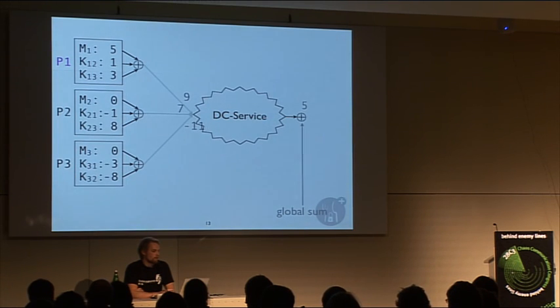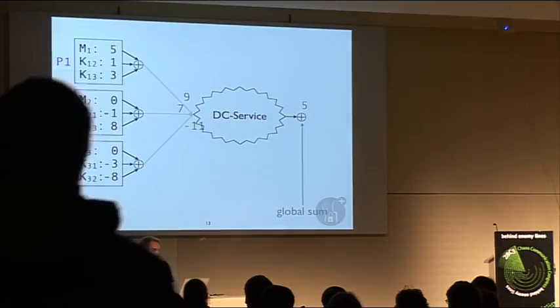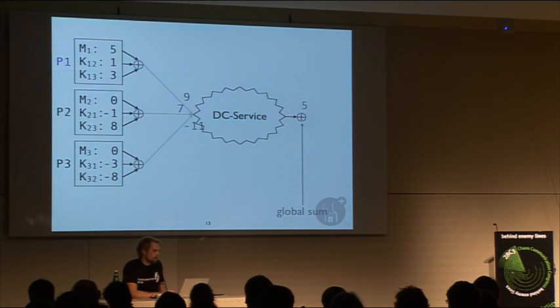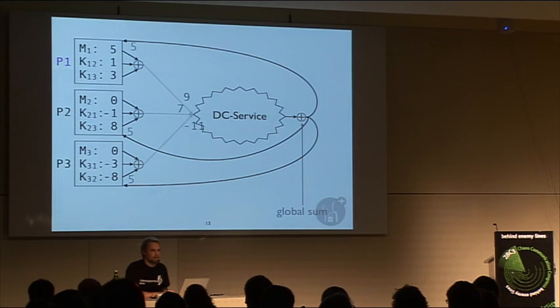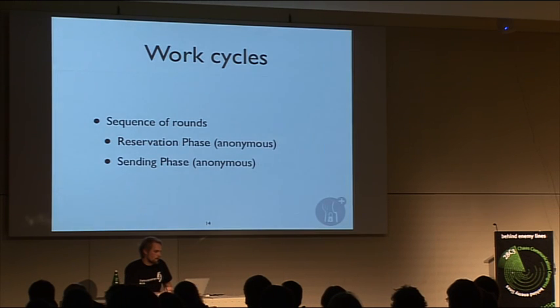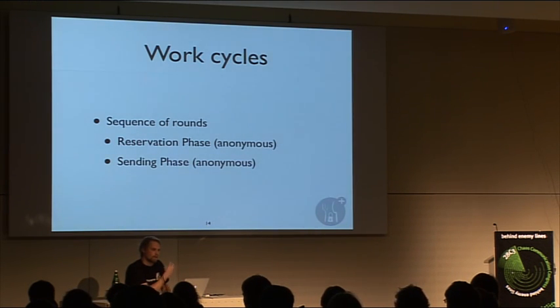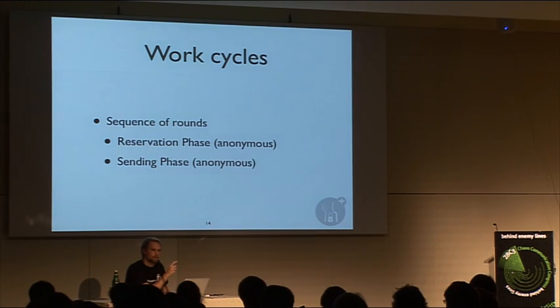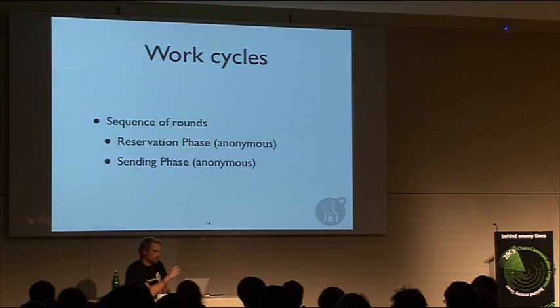To achieve recipient anonymity, the DC service broadcasts the global sum back to all participants. This way, the probability that the message is intended for any one of the three participants is equal — it's perfect recipient anonymity. But since only one participant can send per round and others must send zero or the neutral element, we need a reservation phase. A sequence of reservation rounds and sending rounds — both anonymous — are defined as work cycles in DC terminology.